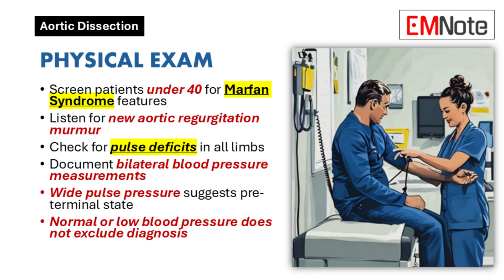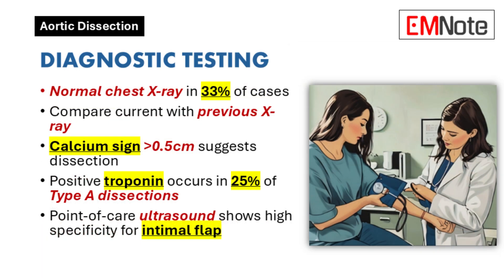Feel for a pulse deficit — a weaker or absent pulse in one limb. Don't be misled by a normal or even low blood pressure reading; low blood pressure does not rule out dissection. A wide pulse pressure — a big difference between systolic and diastolic readings — is particularly concerning, as it often indicates the patient is in a pre-terminal state requiring immediate surgery.